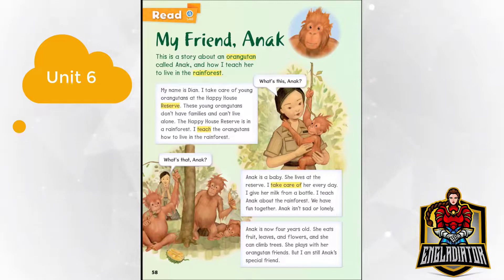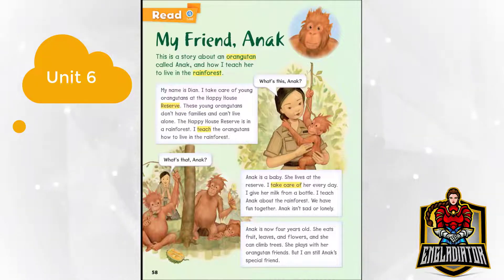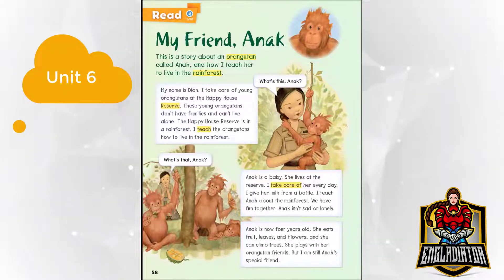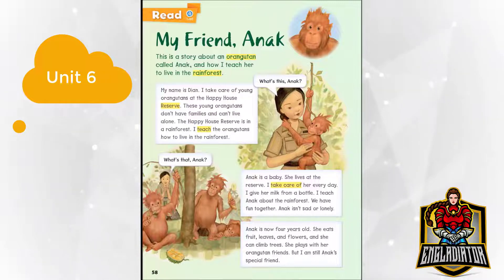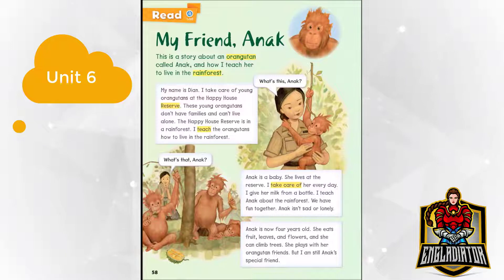Page 58. Read: My Friend Anak. This is a story about an orangutan called Anak and how I teach her to live in the rainforest. My name is Diane. I take care of young orangutans at the Happy House Reserve. These young orangutans don't have families and can't live alone. The Happy House Reserve is in a rainforest.